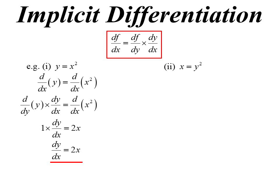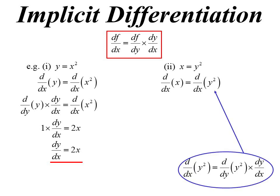Ordinarily you'd think to make y the subject and then proceed, but you don't need to. Just differentiate both sides with respect to x. On the left hand side, differentiating x with respect to x — that's easy, it's just one. On the right hand side, differentiating y² with respect to x — well I can't do that, but I can differentiate it with respect to y. So I differentiate y² with respect to y, getting 2y, then multiply by dy/dx. Rearranging, dy/dx = 1/(2y). It's the derivative we're looking for, just in terms of y instead of x. You can substitute in the y value of the point to get the slope.